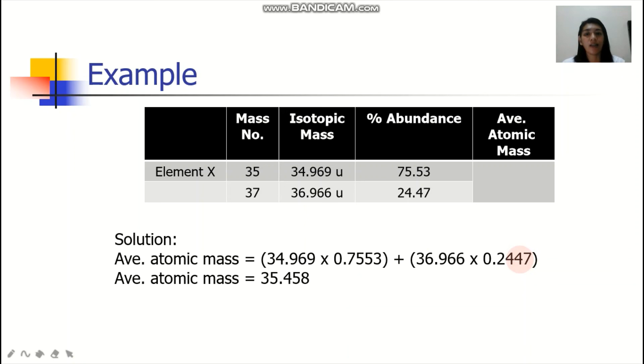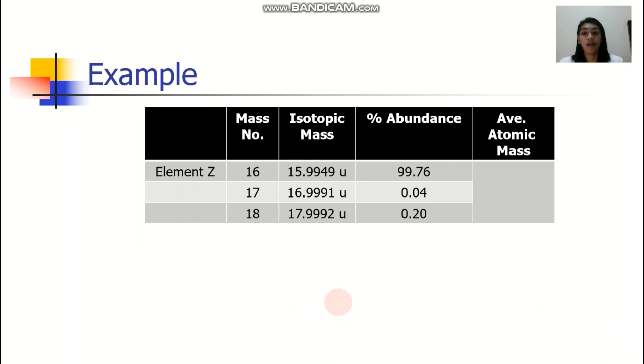Computing this, try to check it on your calculators. The average atomic mass is 35.458.